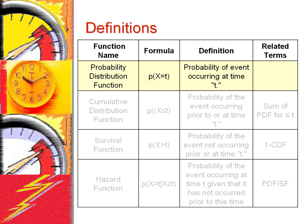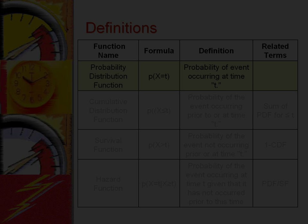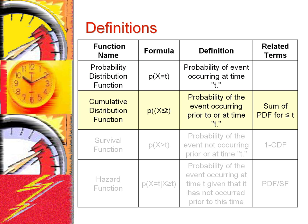We begin with the simplest concept: the probability distribution function. This is the probability that the event of interest will occur at time period t. The cumulative distribution function is the probability that the event would occur at or before time t. It is easy to calculate the cumulative distribution function from the probability distribution functions — it is the sum of the probability distribution function for the current and all prior time periods.